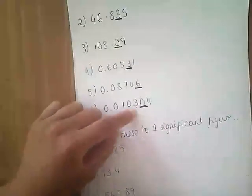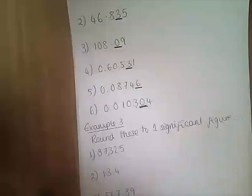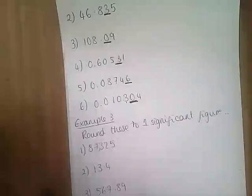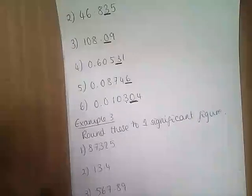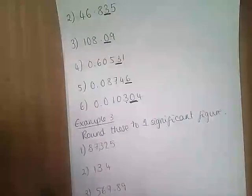When we are rounding to a significant figure, we want that many figures. So if you're rounding to three significant figures, you want three numbers and the rest zeros. If it's two significant figures, you want two figures and the rest zeros. If it's one significant figure, one number and the rest zeros.